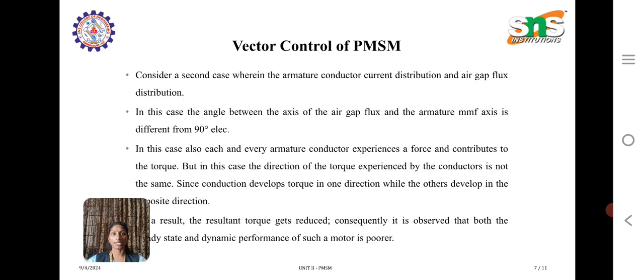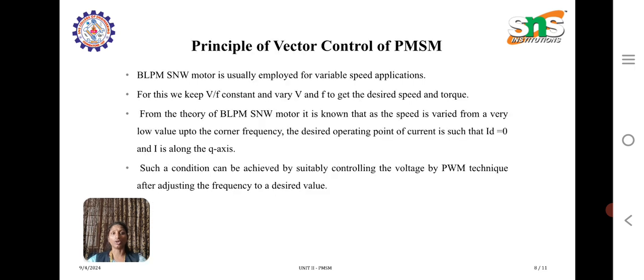Coming to vector control in detail, we consider two parameters: voltage and frequency. We call this V by F control. For this, we keep V by F constant, and we can vary V and F to get the desired speed and torque. From the theory of brushless permanent magnet sine wave motor, it is known that as speed is varied from a very low value up to the corner frequency, the desired operating point of current will be equal to zero and that current is along the q-axis, the quadrature axis. Such a condition can be achieved by suitably controlling voltage by PWM technique after adjusting frequency to a desired value. From here we observe that by varying voltage and frequency, the desired speed can be achieved using vector control technique.